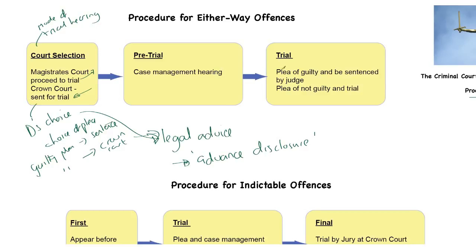At the trial, there is then either a plea of guilty and we go straight to sentencing by the judge, or a plea of not guilty and we go to trial by jury. So that's the either way offence.